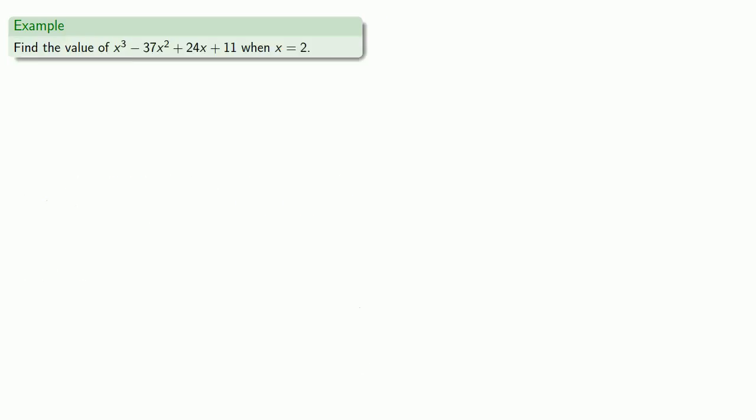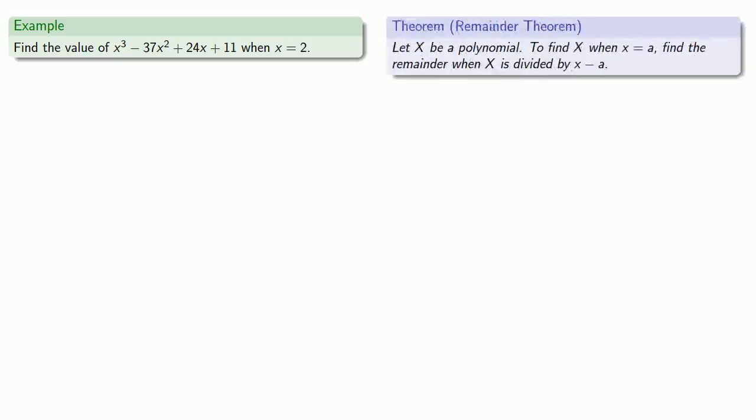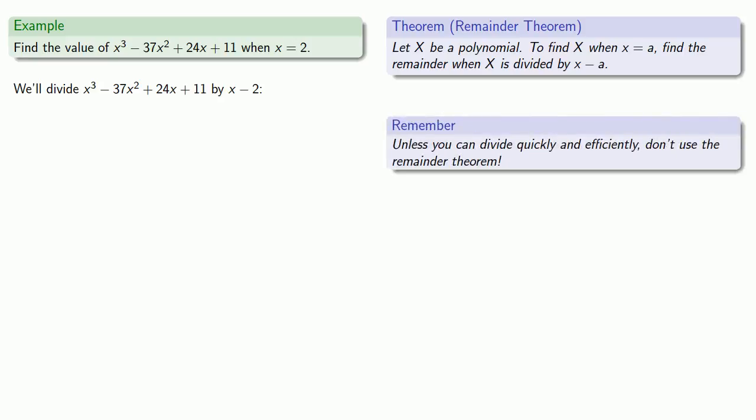For example, let's find the value of X cubed minus 37X squared plus 24X plus 11 when X equals 2. Well, since the remainder theorem is our shiny new toy, let's use it. So if we want to find the value of this polynomial when X equals 2, the remainder theorem says find the remainder when you divide. Well, there's just one problem. We have to do the division. So unless you can divide quickly and efficiently, don't use the remainder theorem.